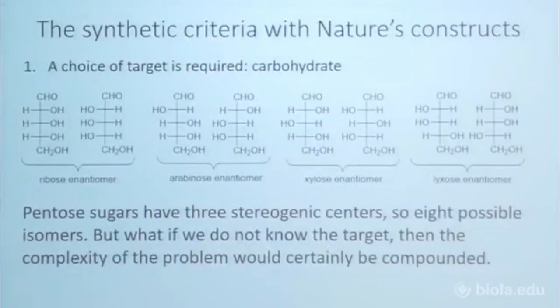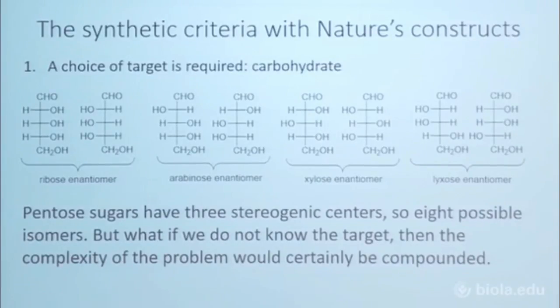Things like formaldehyde and ammonia — he had to make these pentose sugars. But the pentose sugars have three stereogenic centers, which means you're going to end up with a total of eight possible isomers. You get these four pairs of enantiomers, and between the pairs of enantiomers, they're diastereomers.